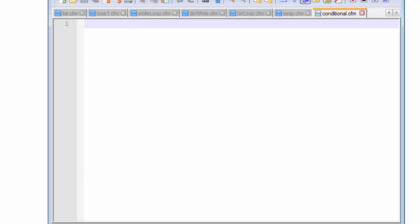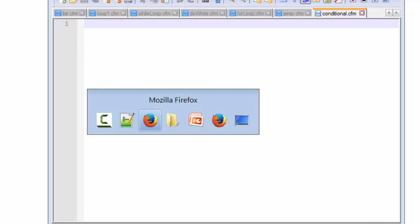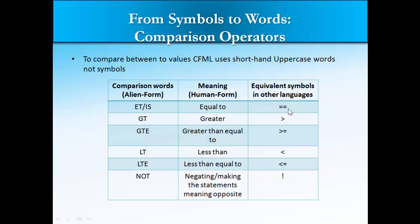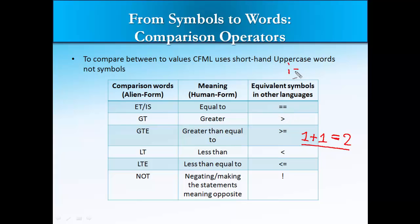Before we start coding, we need to look at a few comparison operators and how they differ from other programming languages. The first is the equals sign. In general mathematics, one equals sign means equals to — for example, one plus one equals two. But in programming, a single equals sign is an assignment operator. For example, declaring a variable i equals zero means we are storing the value zero inside variable i.